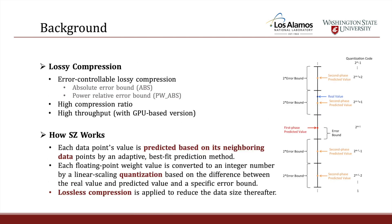Lossy compression compresses data and reconstructs it so that the reconstructed data is slightly different from the original. In this paper we use error-bounded lossy compression, which has error-controlled modes. For example, in absolute error-bound mode, the user defines an error-bound and the reconstructed data is guaranteed to differ from the original by no more than that bound. Lossy compression generally provides a high compression ratio compared to lossless compression, and high throughput with GPU-based versions.